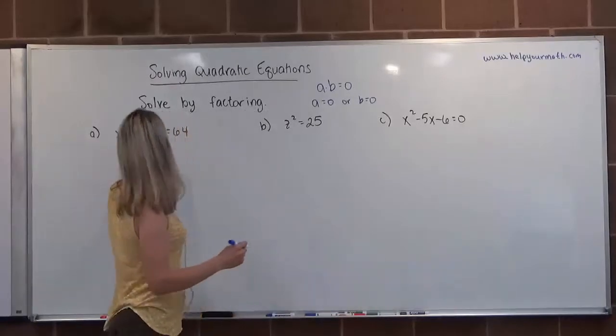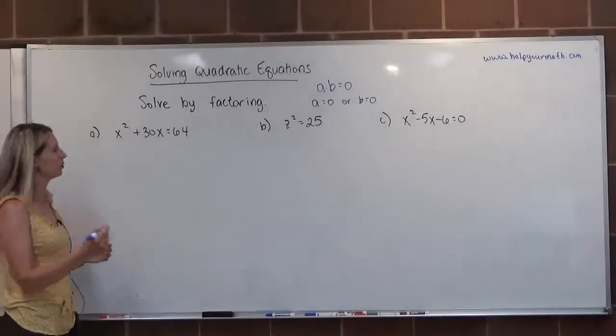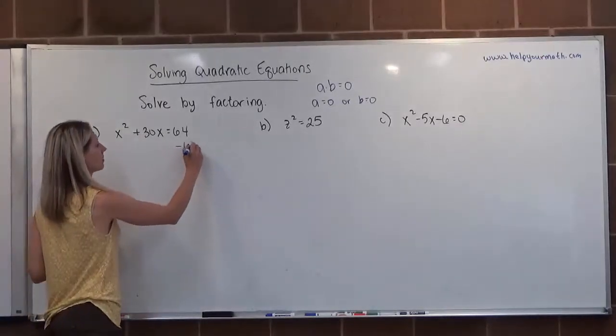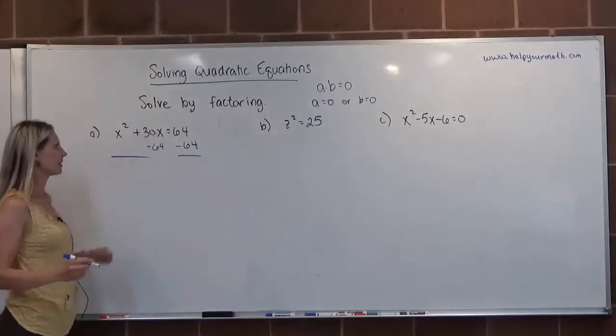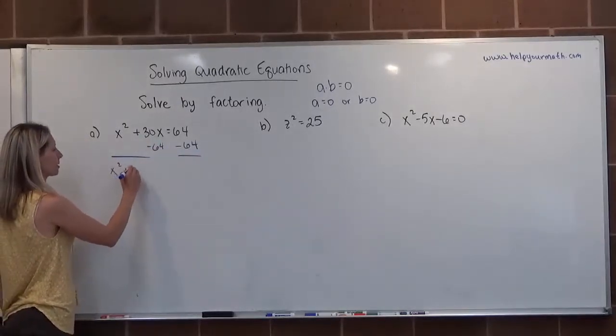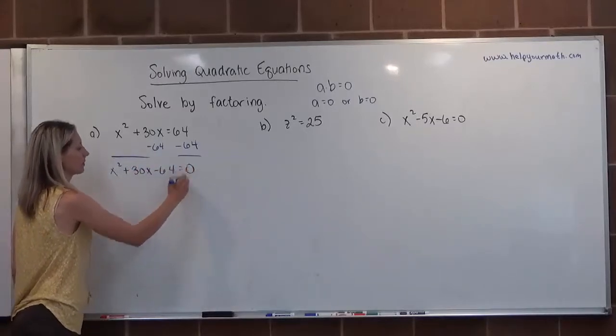In our first example, x squared plus 30x equals 64. This is not equal to zero. So the first thing we need to do is subtract 64 from both sides. On the left-hand side, there is no constant, so it's going to be placed behind the 30. So it's going to be x squared plus 30x minus 64 is equal to zero.